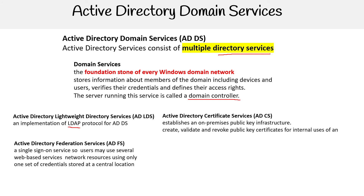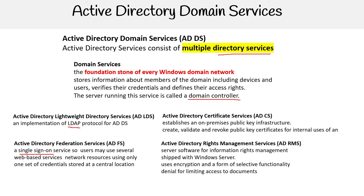We have Active Directory Federation Services, which provides single sign-on. Users may use several web-based services and network resources using only one set of credentials stored at a central location. We also have Active Directory Rights Management Service, which is server software for information rights management that ships with Windows Server and uses encryption and a form of selective functionality denial for limiting access to documents.